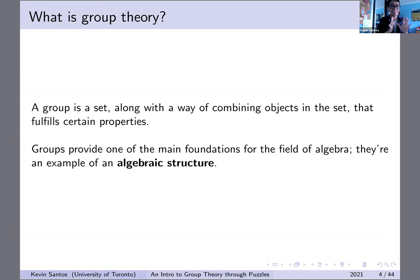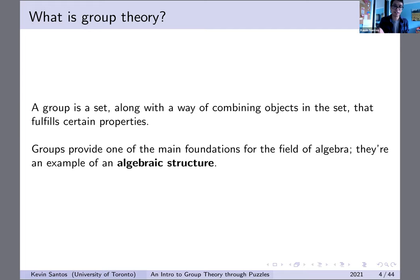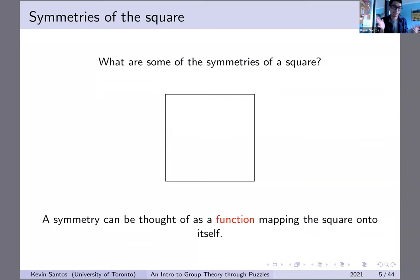So what is group theory? The mathematical object that is a group is a set, along with a way of combining the objects in that set that fulfills certain properties. Groups provide one of the main foundations for the field of what's known as abstract algebra, and it's an example of an algebraic structure from which we can build some other algebraic structures. Groups are basically a way of adding structure to a set, and that lets it be easy to manipulate the objects in that set in a useful and predictable way.